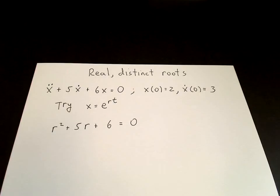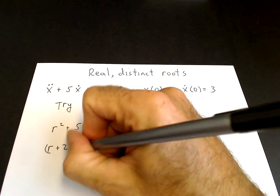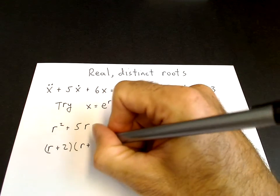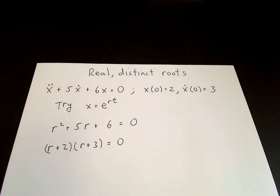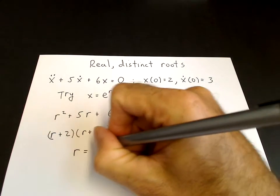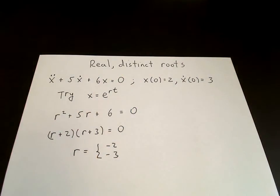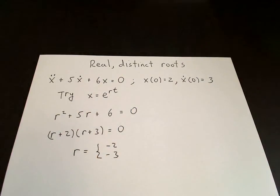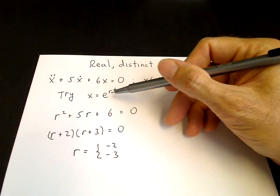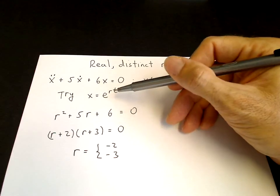This one is simple because it factors. So 6 is 3 times 2, and 5 is 3 plus 2. So we have (r + 2) times (r + 3) = 0. And there are two roots, so r equals either -2 or -3. That means we found two solutions of the differential equation: e^(-2t) and e^(-3t).